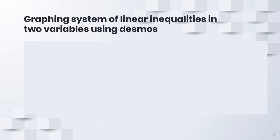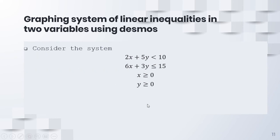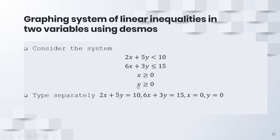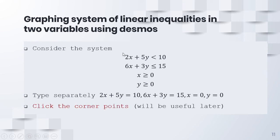Since we're dealing with at least two linear inequalities, graphing the solution manually may take time, so we will use Desmos. To graph a system of linear inequalities using Desmos: first, list all the inequalities you want to type; then replace these inequalities with equal signs, which will be used later; and finally, when you identify the shaded region, click the corner points.